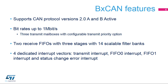The STM32 CAN peripheral supports the Basic Extended CAN protocol versions 2.0A and B active, with a maximum bitrate of 1 megabit per second. The BX CAN includes three transmit mailboxes with a configurable transmit priority option, and two receive FIFOs with three stages with 14 scalable filter banks.